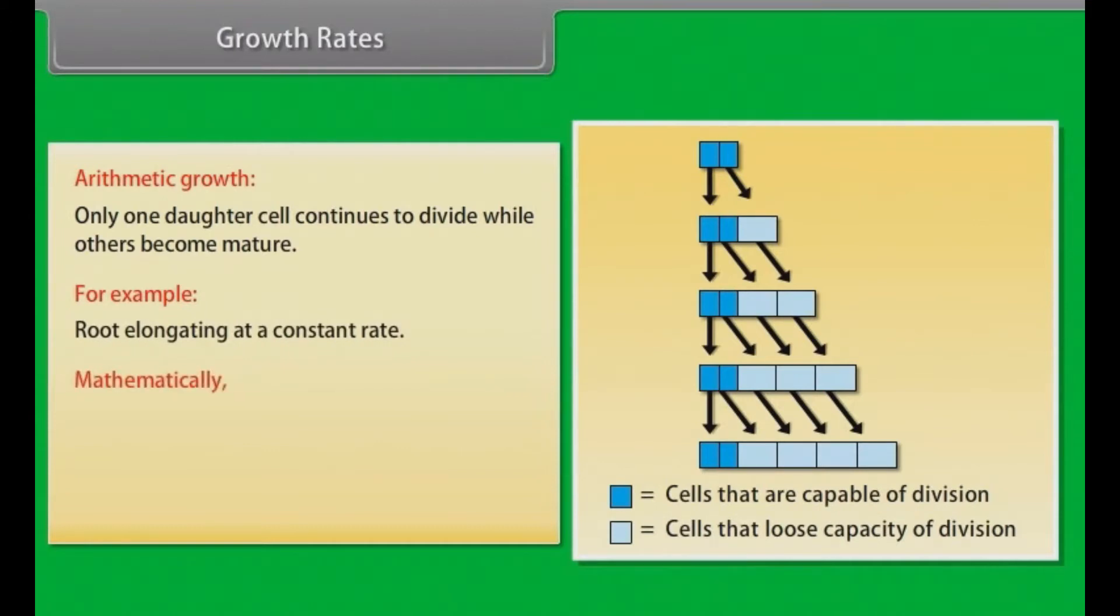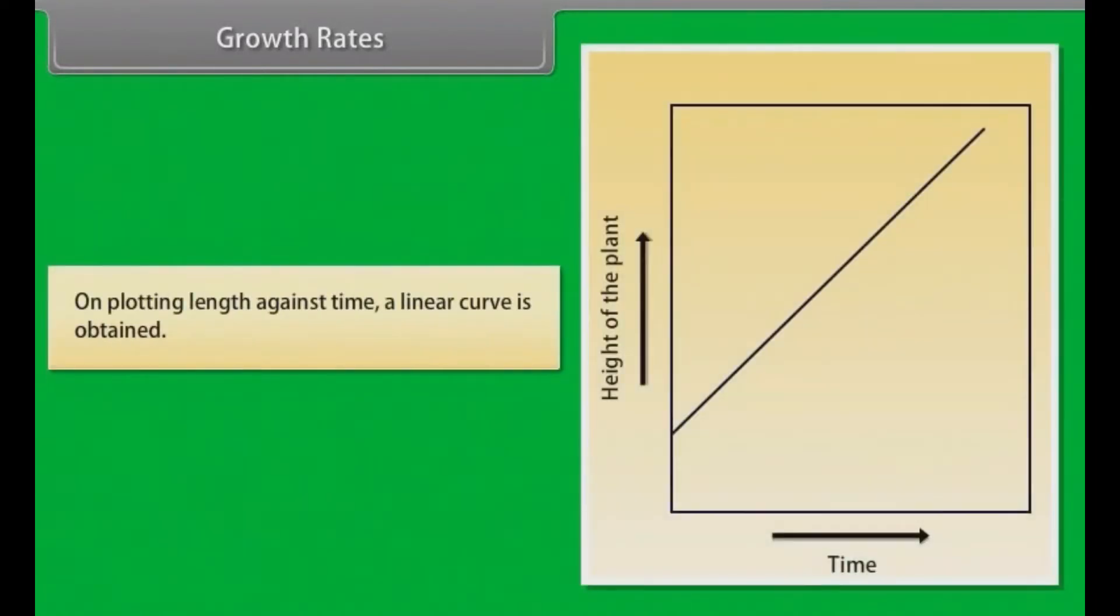Mathematically, Lt is equal to L0 plus Rt. Where Lt is equal to length at time t, L0 is equal to initial length, R is equal to growth rate. On plotting length against time, a linear curve is obtained.